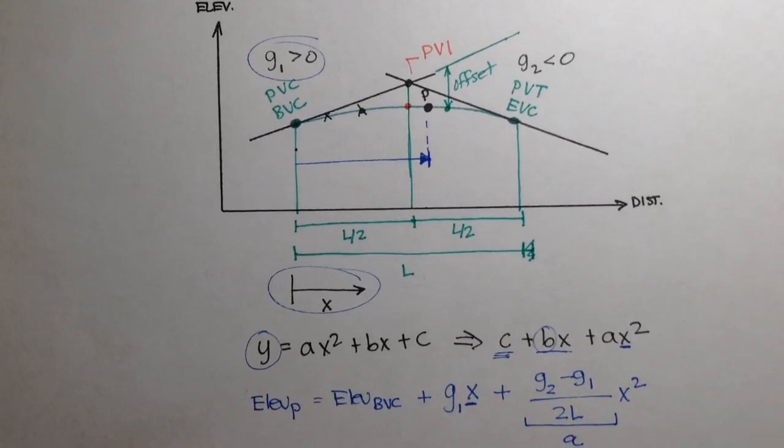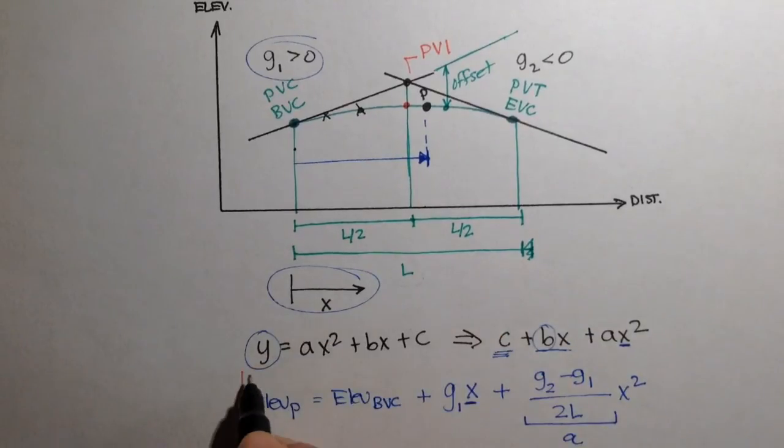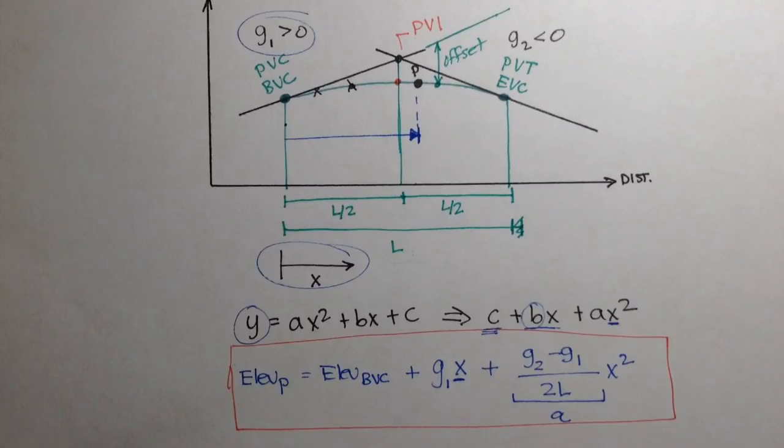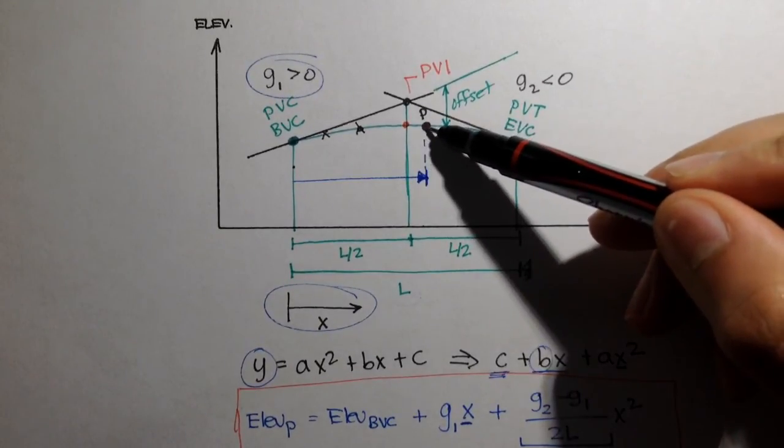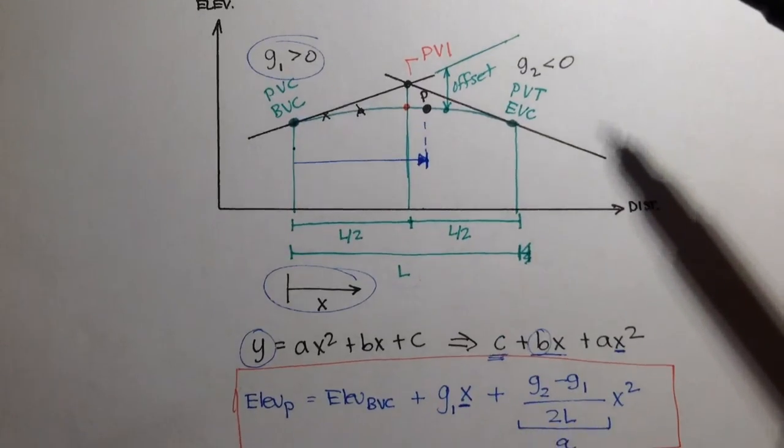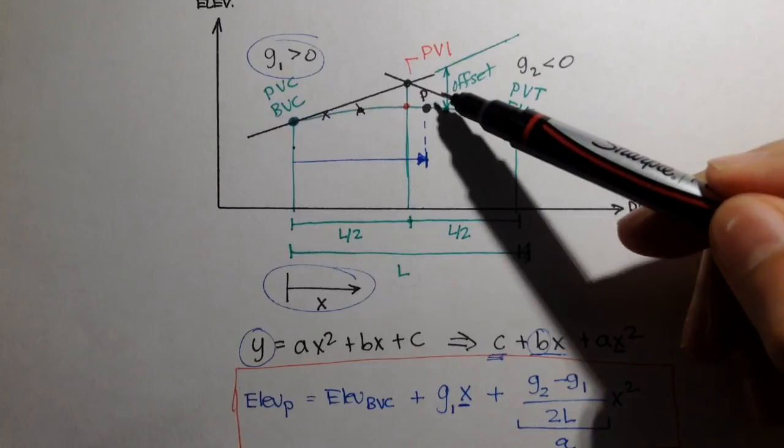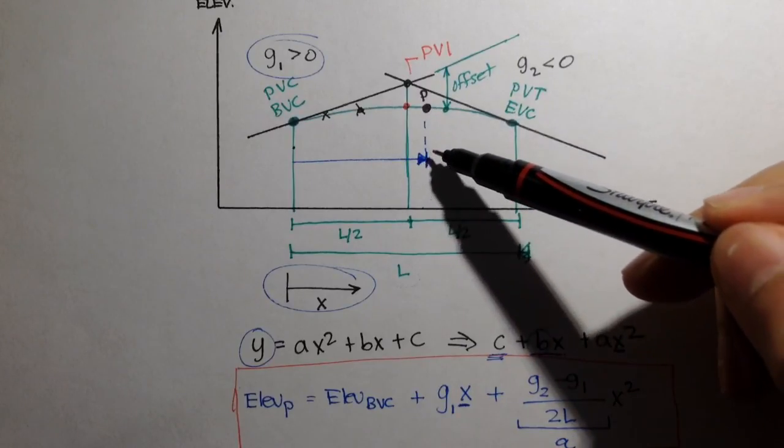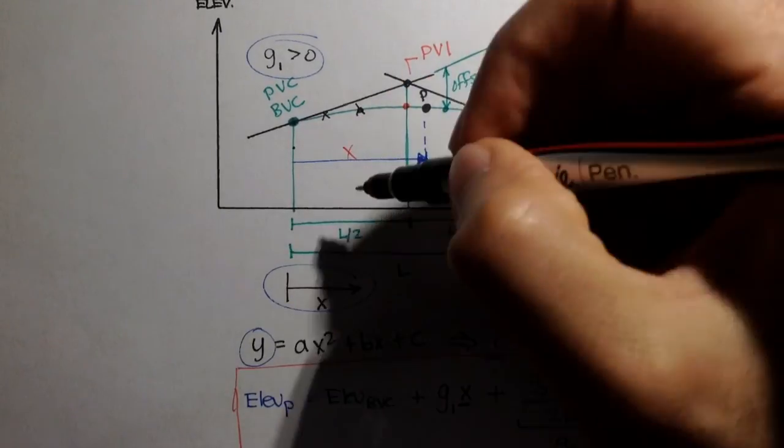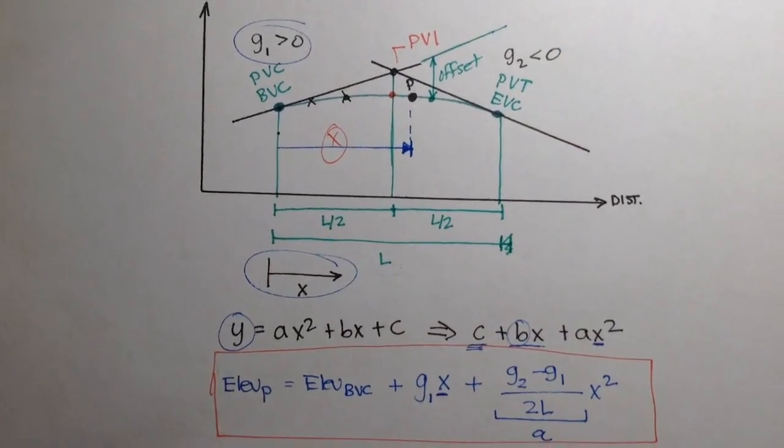All right, so this equation right here is the equation we'll be using to do things like finding the elevation of point p or any point that we're interested in. And we can also use it to find other things. Let's say we already had the elevation of p and we actually wanted to know how far away from the BVC was located. Then we would use this formula and we would calculate x. So in the next several videos, we'll get a little bit more accustomed to this equation. And then we'll go from there. All right, see ya.